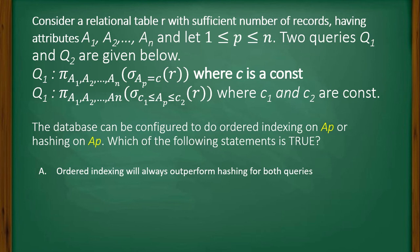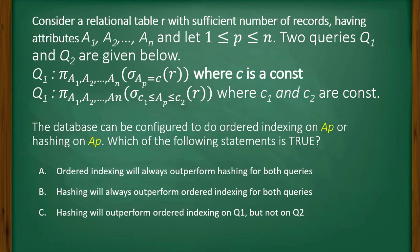Option B: hashing will always outperform ordered indexing for both queries. Option C: hashing will outperform ordered indexing on Q1 but not on Q2. Option D: hashing will outperform ordered indexing on Q2 but not on Q1.